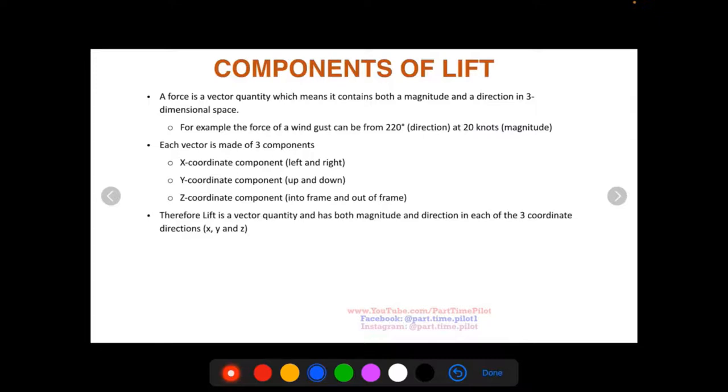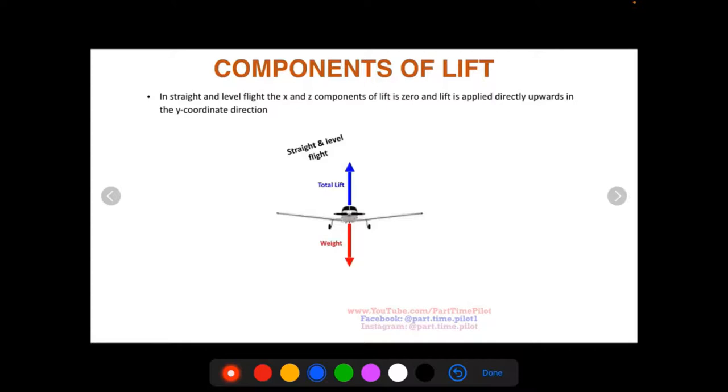Therefore, lift is a vector quantity. It is a force, so it has both magnitude and direction in each of the three coordinate directions: X, Y, and Z. In straight and level flight, the X and Z components of lift are zero, and lift is applied directly upwards in the Y coordinate direction. So we know that in straight and level flight, lift is completely vertical and it opposes gravity or weight, and so you want more lift than weight, and that's how you fly.